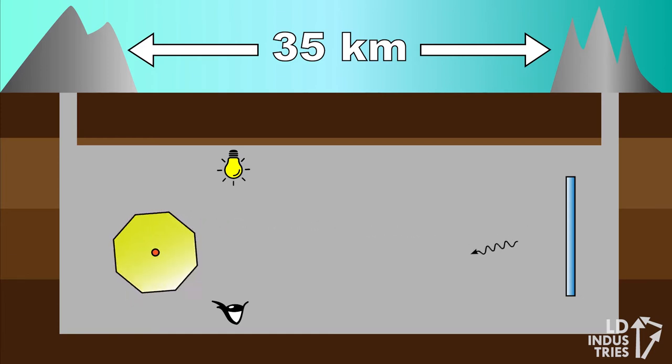The light hits a flat mirror at the end of the shaft, reflects and comes back through another 35 kilometers, then strikes the rotating mirror again and is sent perfectly into the observer's eye.